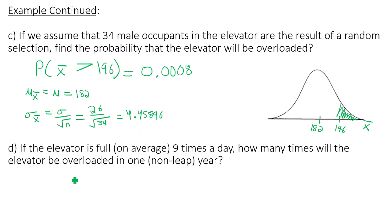So if the elevator is full on average nine times per day, how many times will the elevator be overloaded in one non-leap year? So that would mean 365 days in a year. So if you have 365 days in a year, and the elevator is full nine times per day, that means in a year, the elevator will be full 3,285 times.